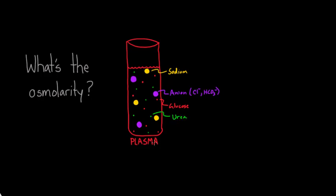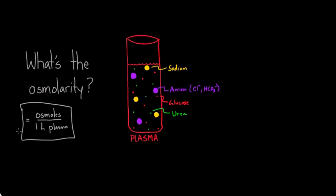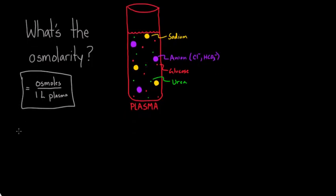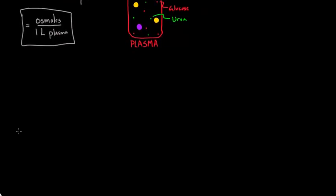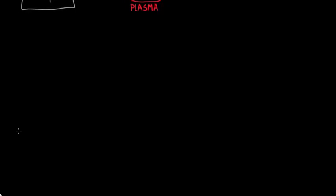So you've got a few things floating around in the plasma, and someone asks you, what is the total osmolarity of the plasma? And you know that this is in units of osmoles per liter plasma. These are the units that we have to think about to answer this question. So let's go through this, and I'm going to give you some lab values. Based on just four of the most representative solutes, we can get a pretty close guesstimate of the osmolarity.